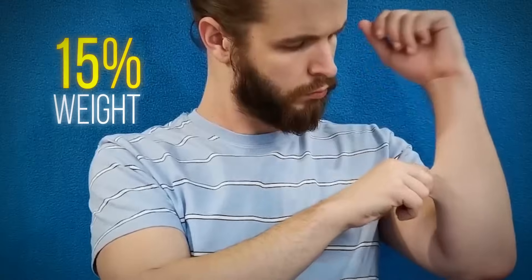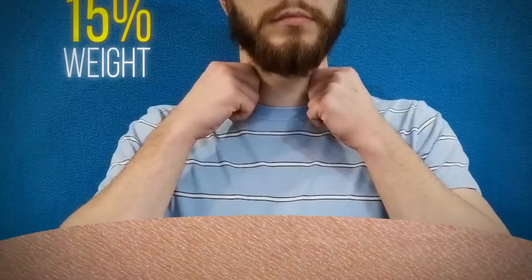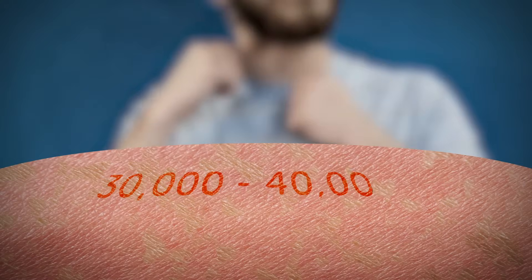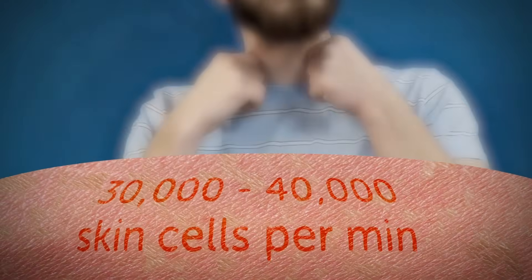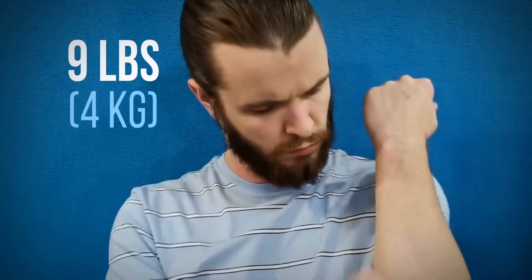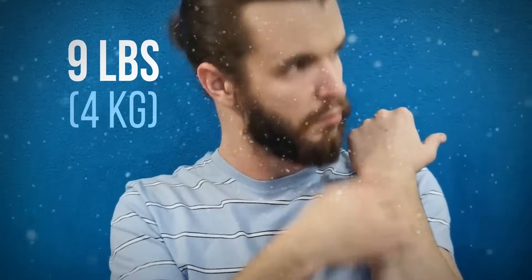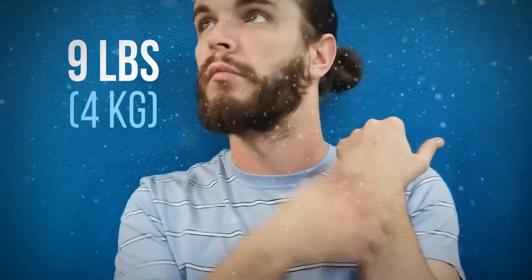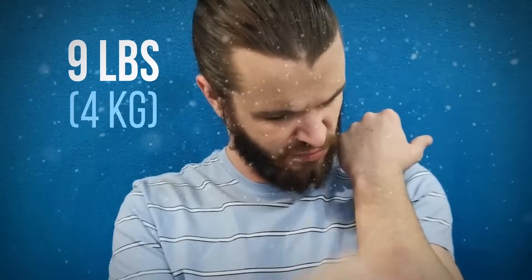The largest organ in your whole body is the skin. It makes up more than 15% of your total body weight. People lose 30,000 to 40,000 skin cells every single minute. It adds up to 9 pounds of skin cells a year. You know that dust in your house? Well, now you know where some of it comes from.